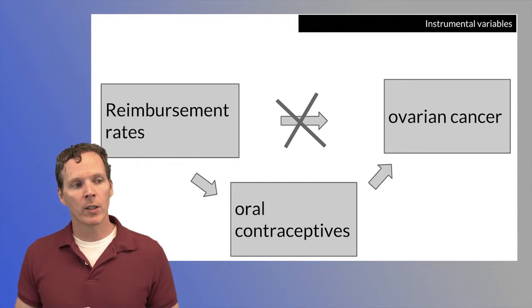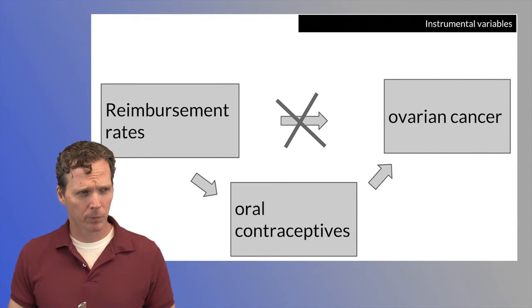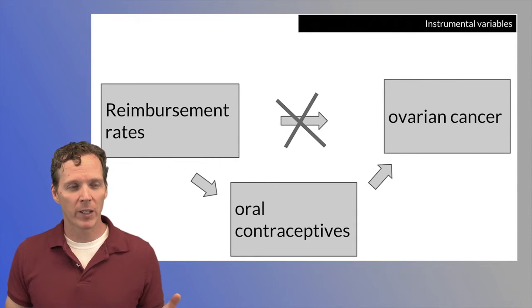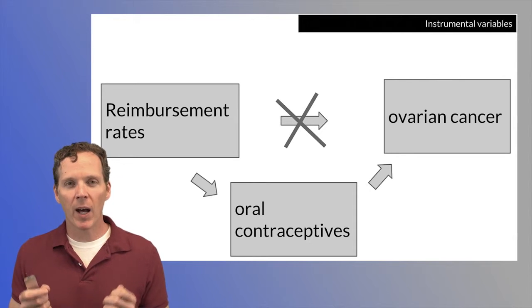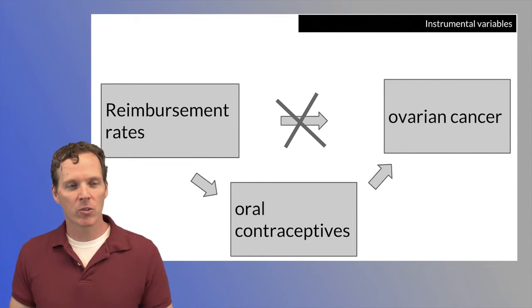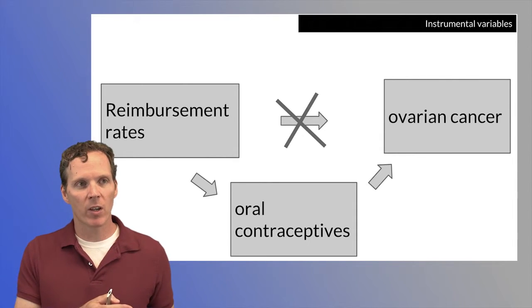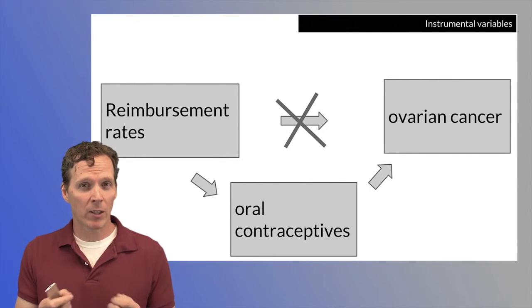What are some other examples? Instrumental variables are a very clever idea — we won't go through the details. But imagine if you wanted to understand whether oral contraceptives had a relationship with ovarian cancer. You could look at something like reimbursement rates as they relate to ovarian cancer. There's no direct link between reimbursement rates and ovarian cancer — how we reimburse oral contraceptive usage through insurance plans can't possibly have any real relationship with ovarian cancer. So any effect of reimbursement rates on ovarian cancer has to go through contraceptive use. People have used this idea to try to get at causal effects without actually having randomization.